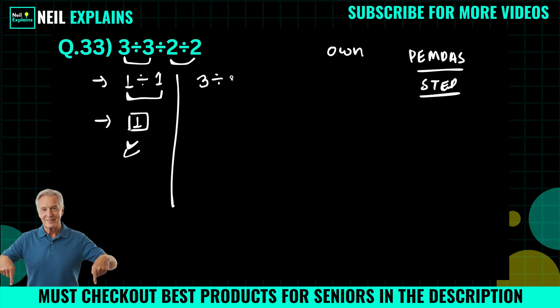3 divided by 3 divided by 2 divided by 2. So according to PEMDAS: parenthesis, exponent, multiplication, division, addition, subtraction. Actually, there are three operations, all are division.